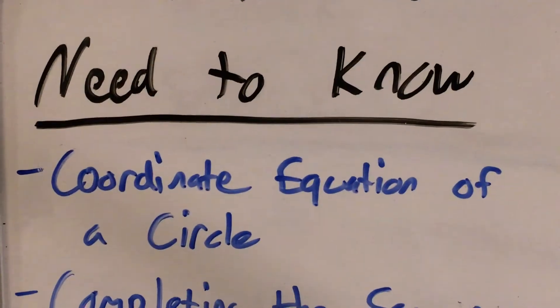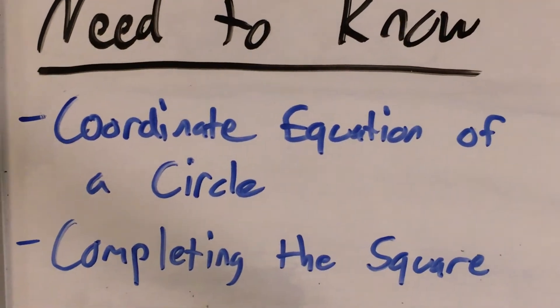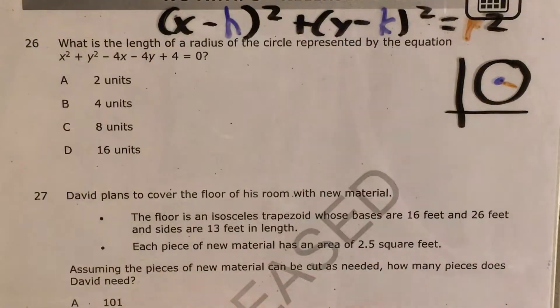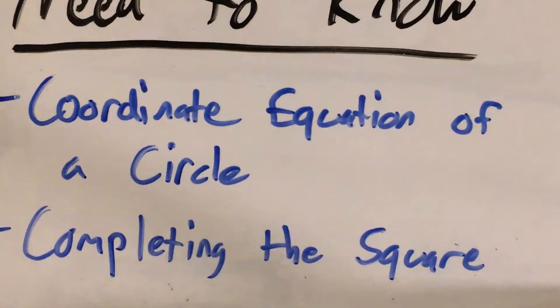The question tells us to find the length of the radius of the circle represented by this equation. Now in order to do a question like this, you'll need to know the coordinate equation of the circle and the way that we're going to get from this to this is by a process called completing the square.